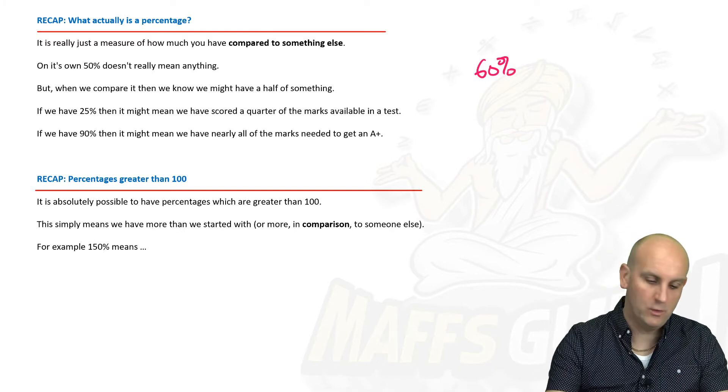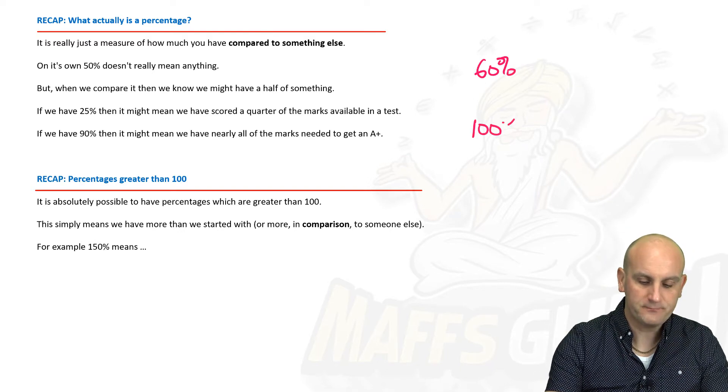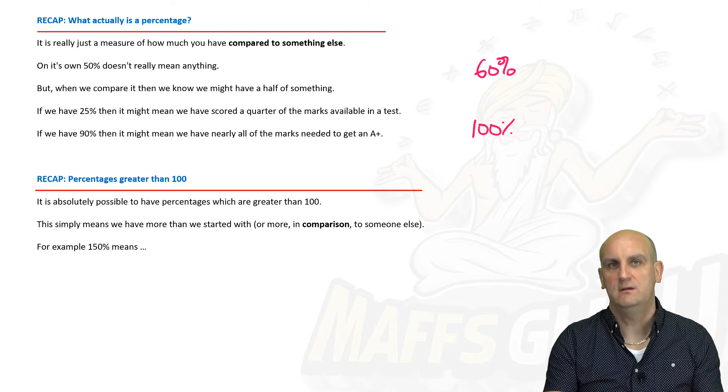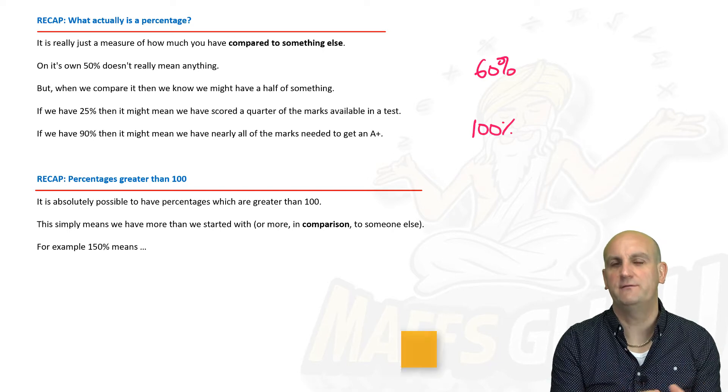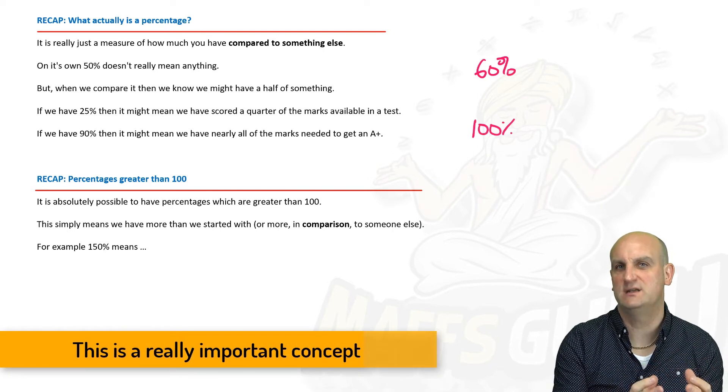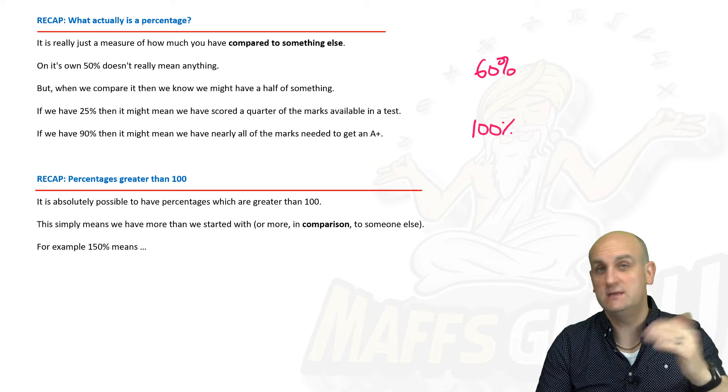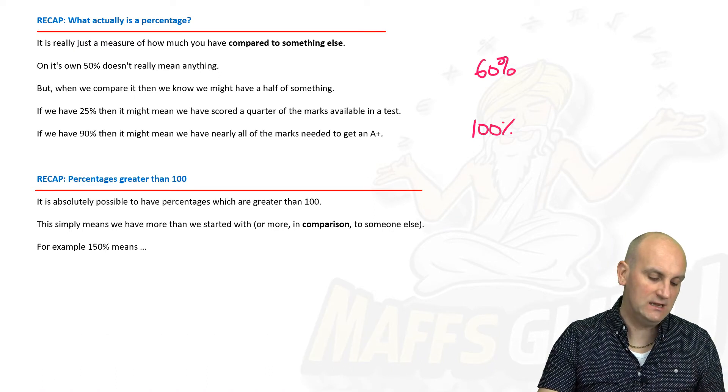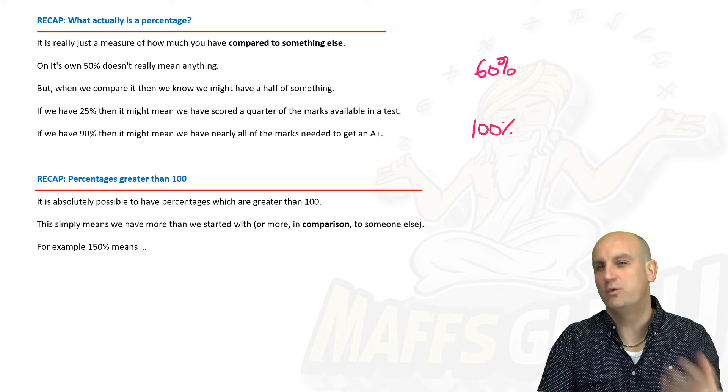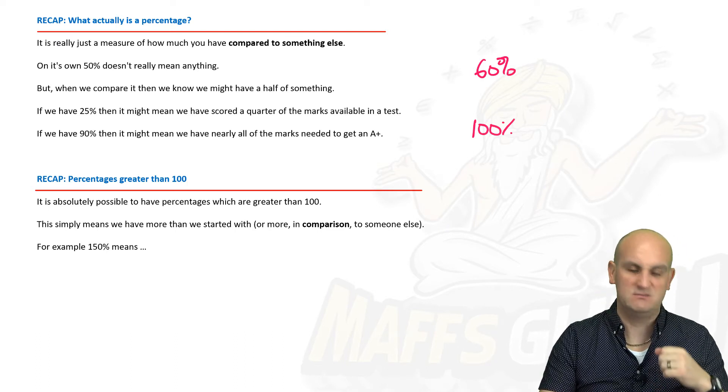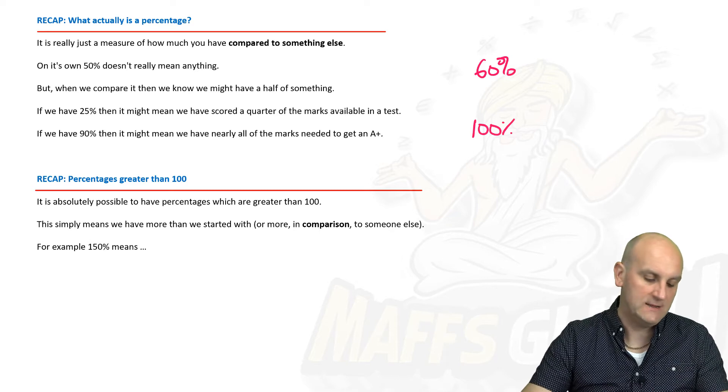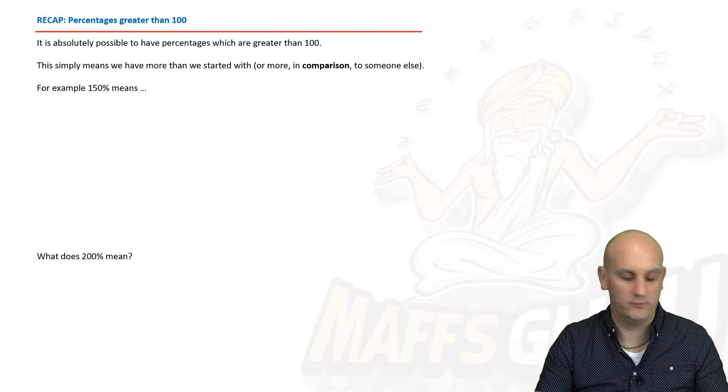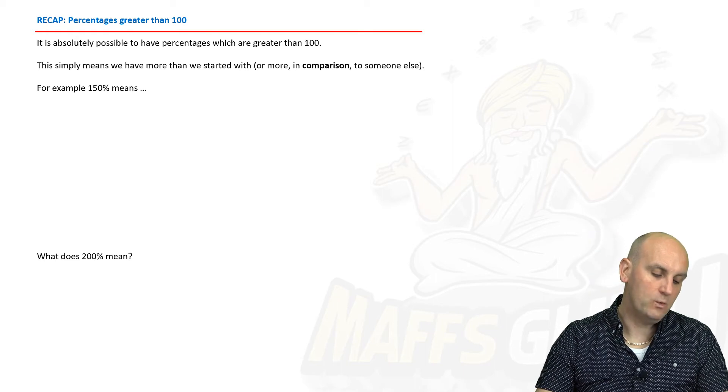The one thing that we do know or like about Maths is the idea of 100%. Because that means we've got everything. Generally in Maths, we think of things as when we start with it, we have 100% of something. We can increase it or decrease it and then Maths gets a little bit more funky. You've got 25%, then you might have scored a quarter of the marks. 90% means maybe you had all of the marks to get an A.